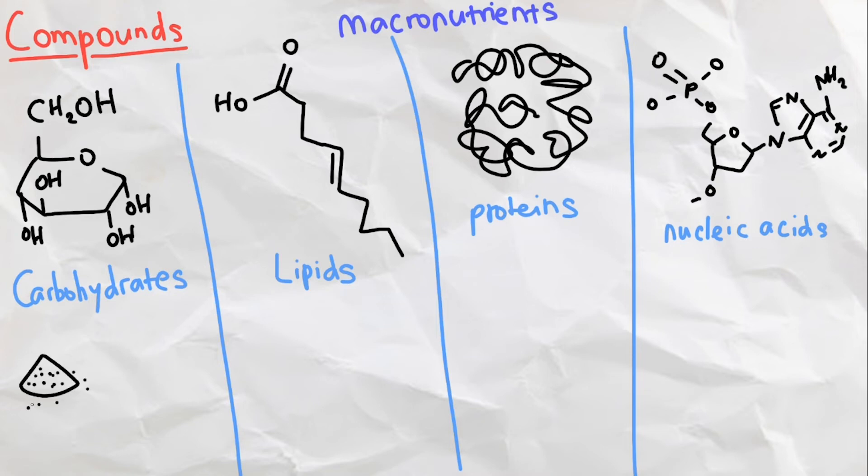Carbohydrates are compounds like sugar that provide us with energy, and they take on this ring shape. Lipids are compounds like fat that store energy, and they take on this long chain shape, really highlighting that carbon is able to form stable bonds with itself.